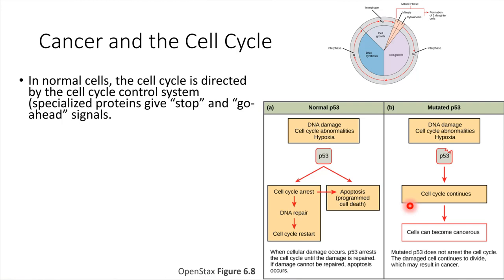Now that we've just walked through cell division, this is a fitting place to talk a little bit about cancer and what cancer is. Cancer is something that can actually be understood in the context of the cell cycle. In normal healthy cells, the whole cell cycle — this schematic at the top — is directed by the cell cycle control system.